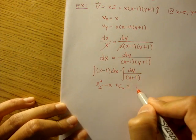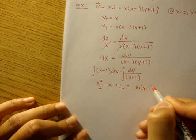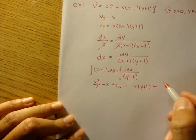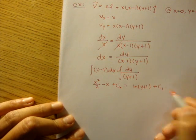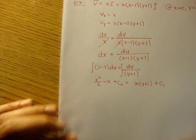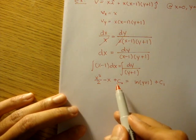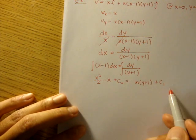And on the right side, we'll actually get ln of y plus 1 plus another constant for this side. We can call that c1. And what I'm going to do is subtract this constant from this side and bring it over here.